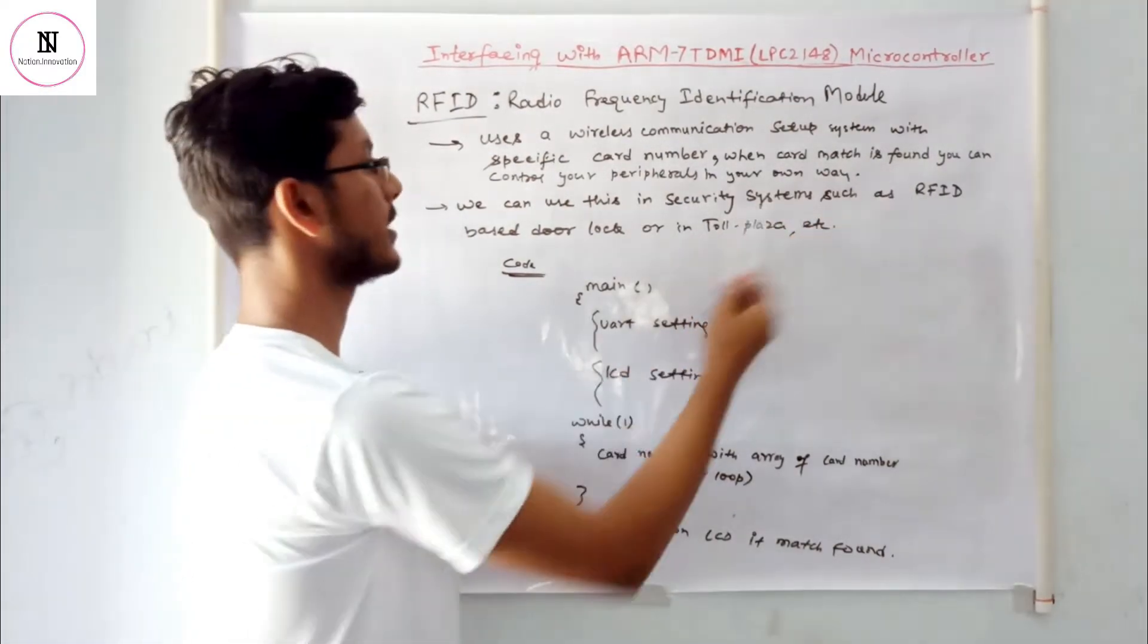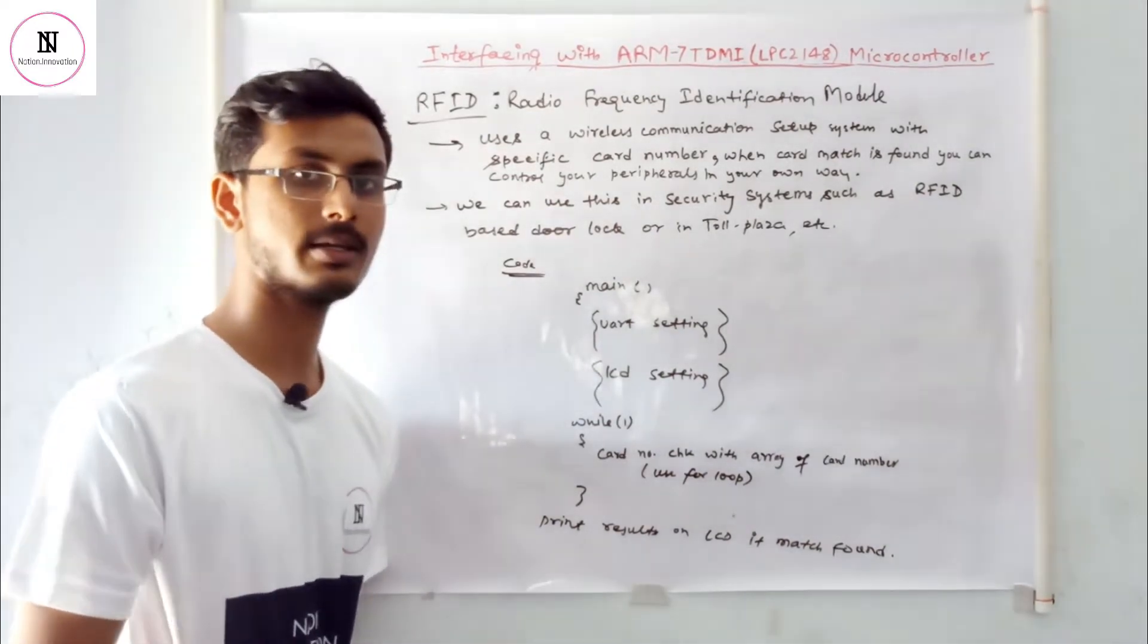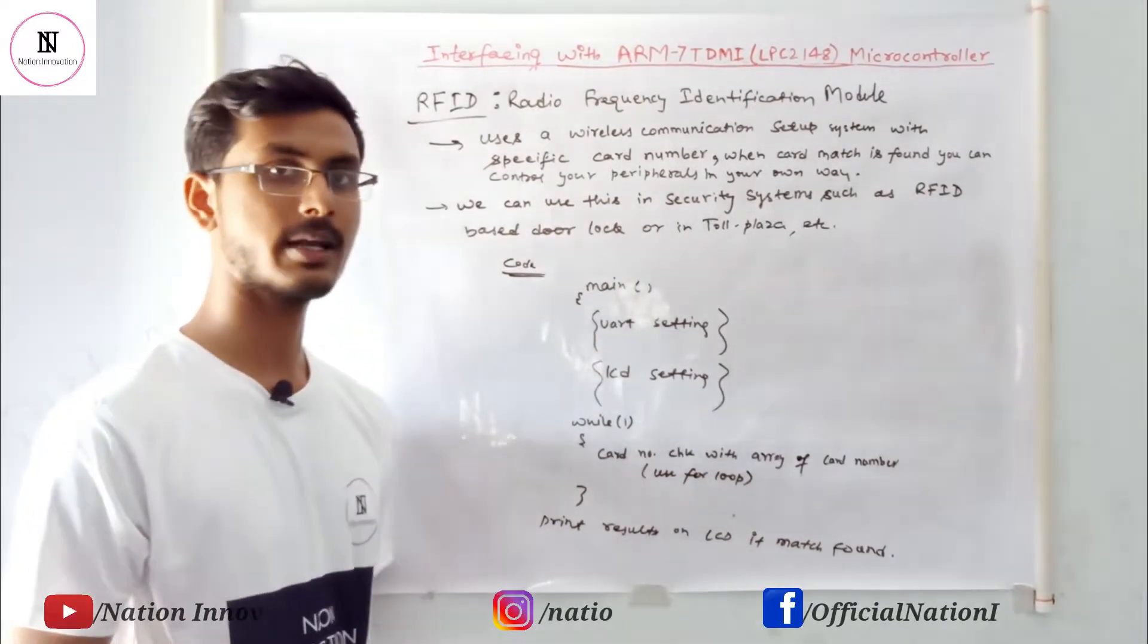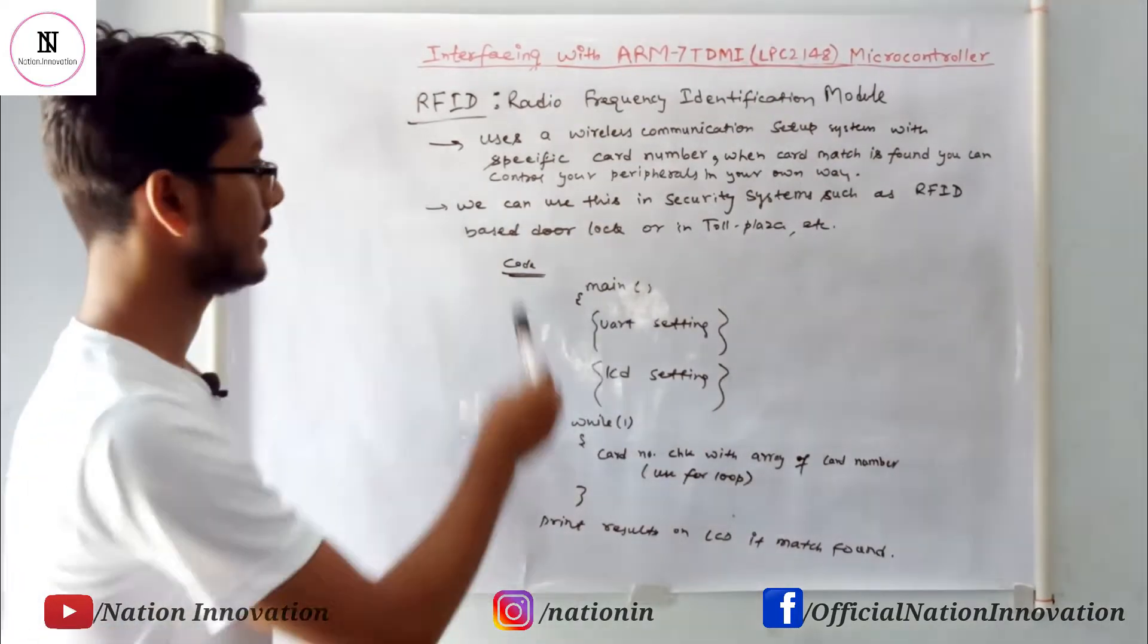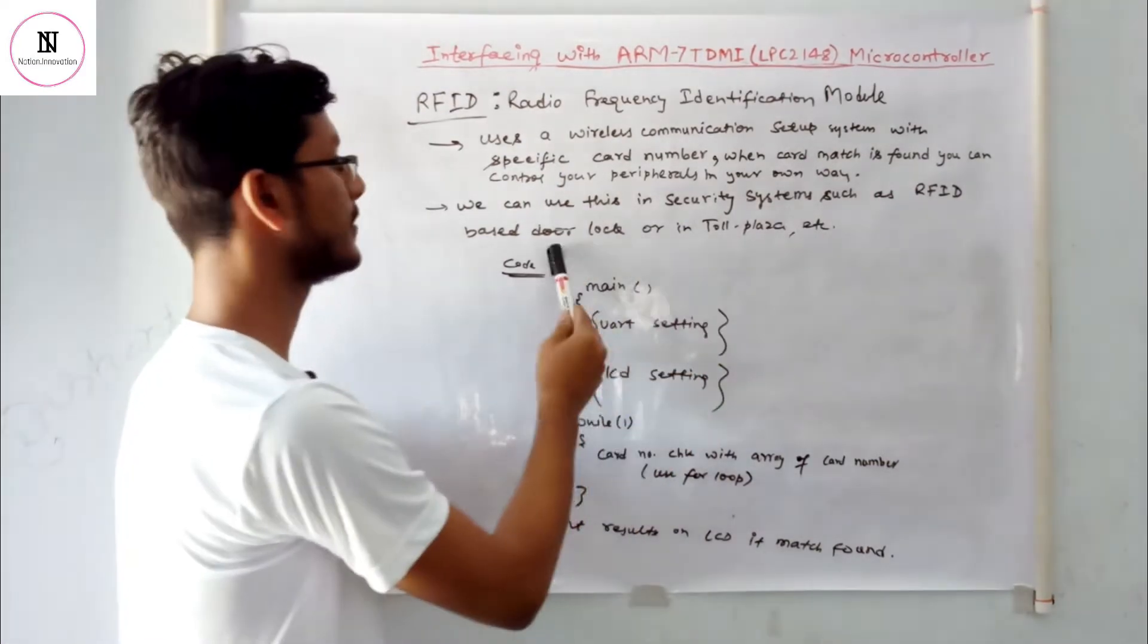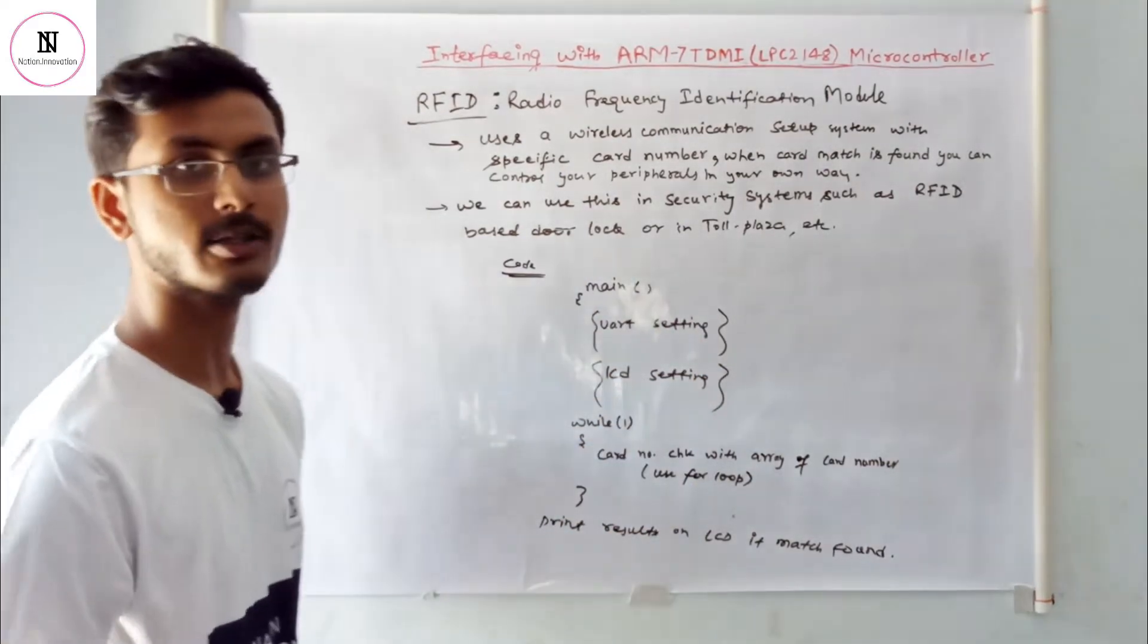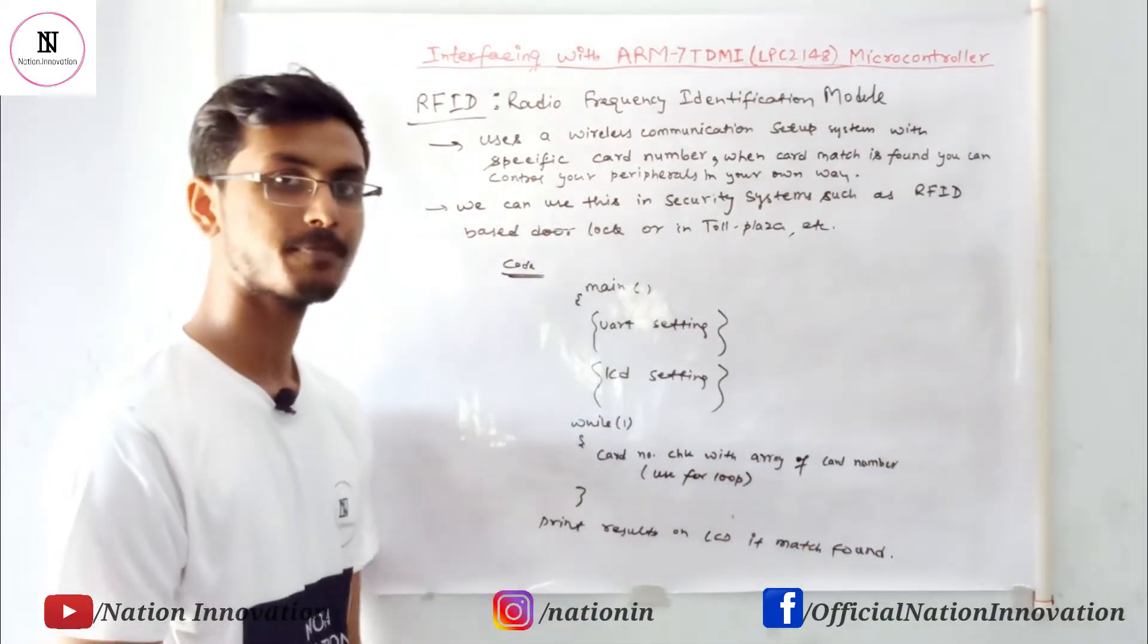When a card match is found, we can control any motor, LEDs, and peripheral devices. It can be used in security systems such as RFID-based door locking systems or toll plaza systems. These are the applications of RFID.